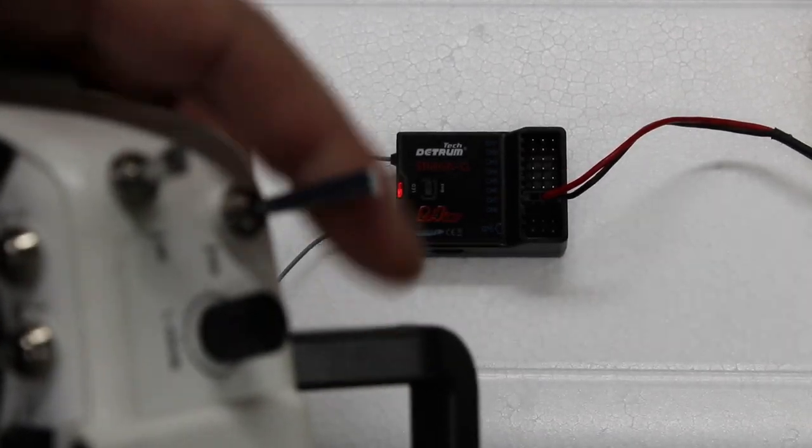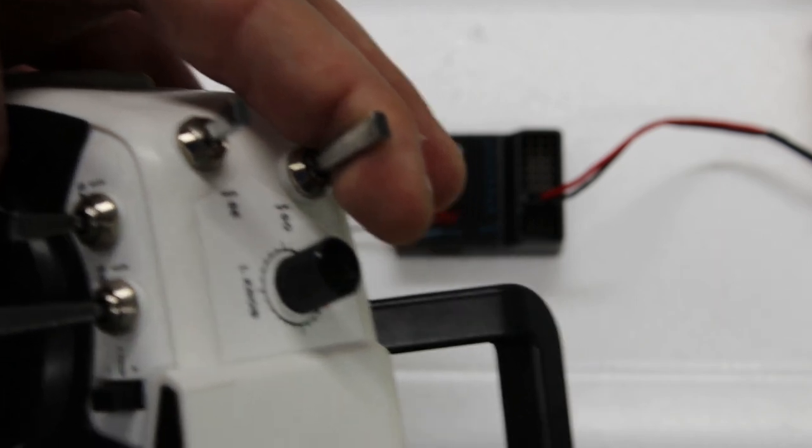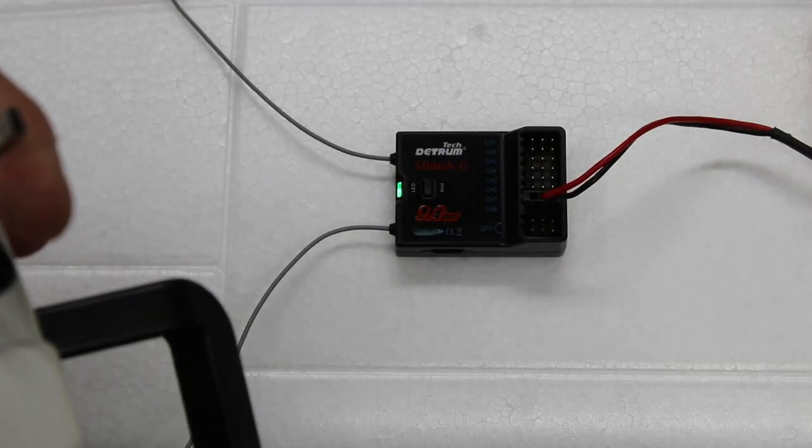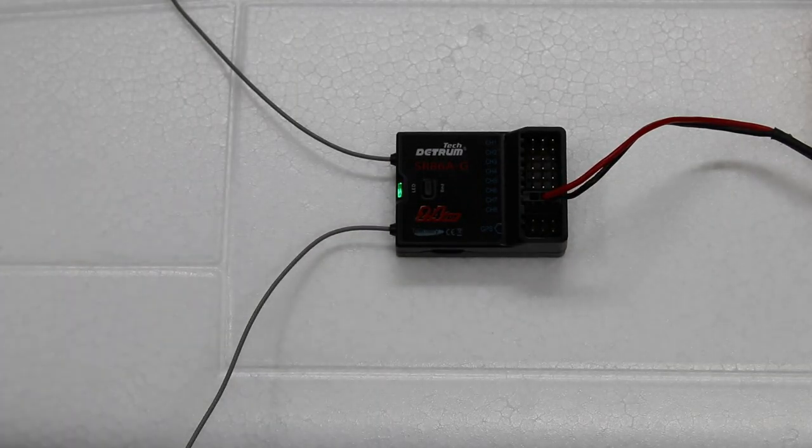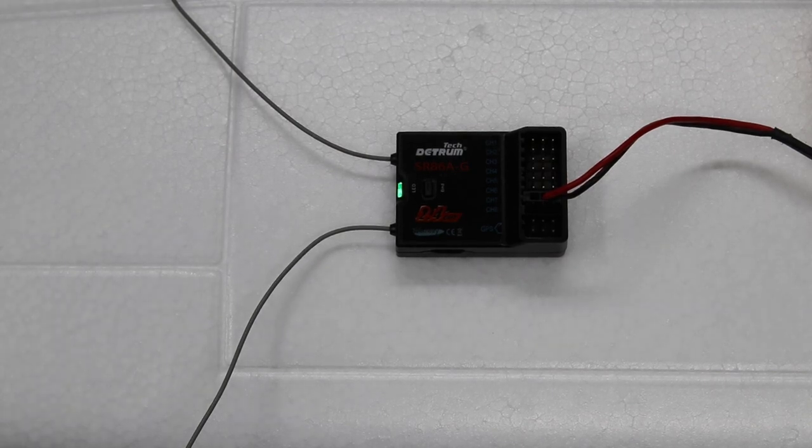And then grab your transmitter, hold the SG switch all the way up, and power on the transmitter. Now you can see that the light has gone green. Once the light goes green, it means that the bind is complete and you're ready to go.